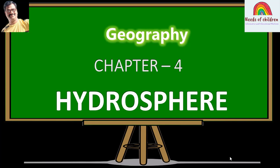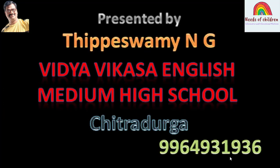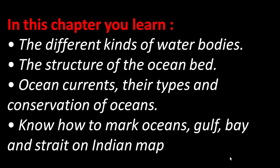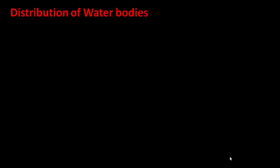Hi, hello, namaste! Welcome back to Needs of Children. We are discussing 8th standard English medium Social Science. In that, Geography Chapter Number 4: Hydrosphere. Let's look at the very important learning points from this lesson. In this chapter you will learn the different kinds of water bodies, the structure of the ocean bed, ocean currents, their types, and conservation of oceans, and how to mark oceans, gulf, bay, and strait on the Indian map.